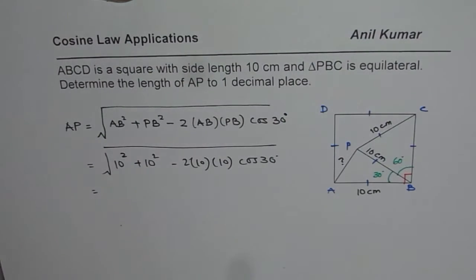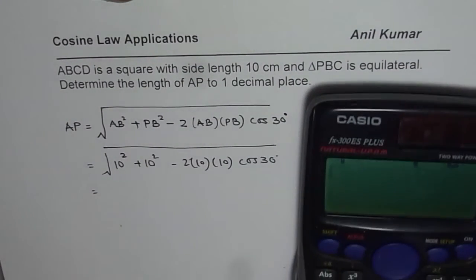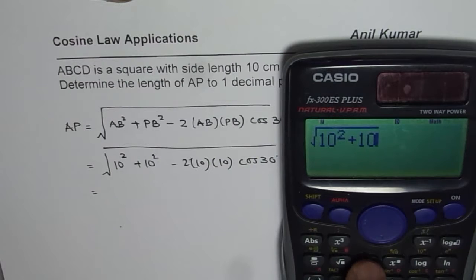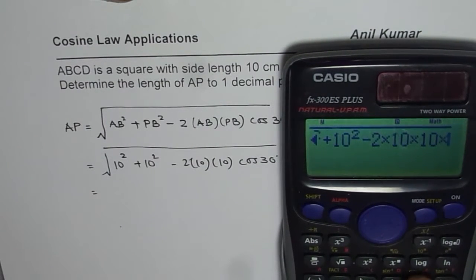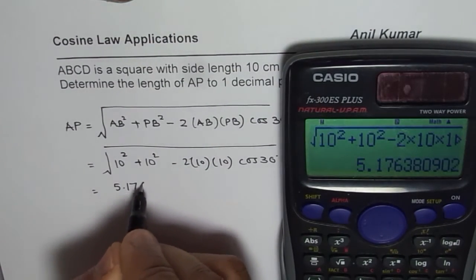So we can use the calculator and calculate this out. The calculation is square root of 10 square plus 10 square minus 2 times 10 times 10 times cos of 30 degrees. So that will be equal to 5.176.